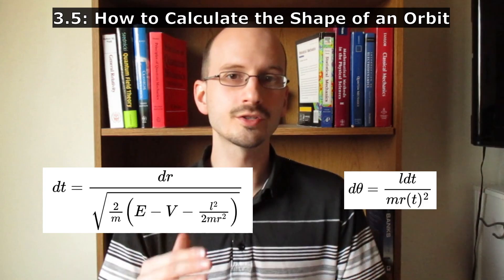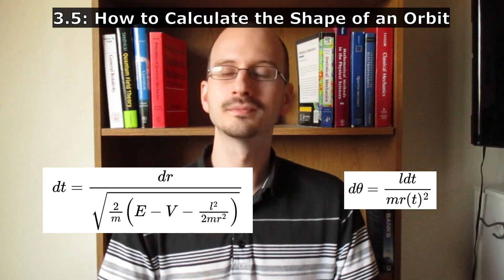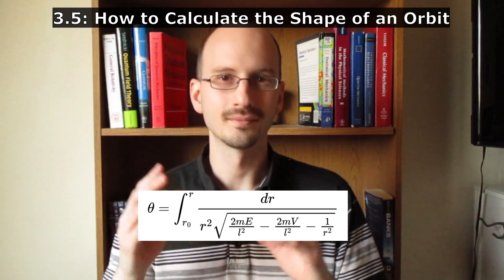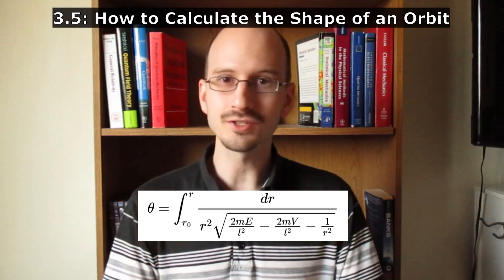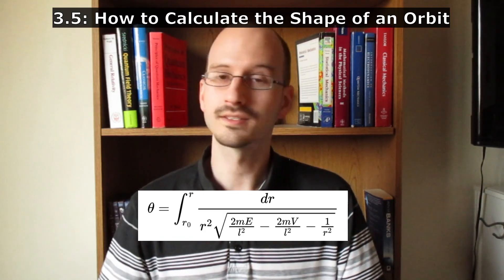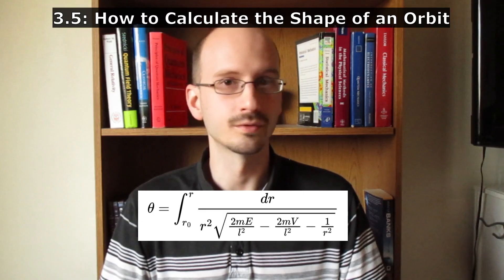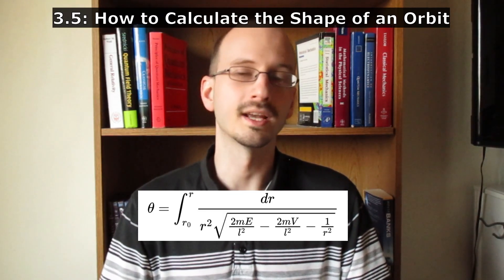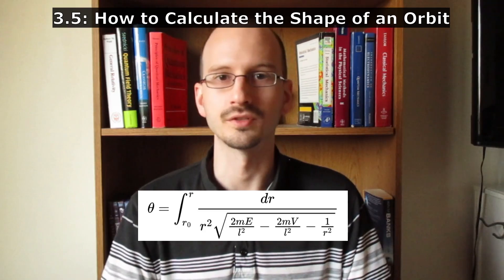Section 3.5 is titled How to Calculate the Shape of an Orbit, represented as theta as a function of r, the angle as a function of the distance between the objects. So remember the equation of motion we set aside earlier? If we combine those, we get this. This is theta as a function of r. And we can't solve it unless we know what v is, unless we know what the potential is. That's the whole section. They don't solve it because you can't solve it in general. You have to know what the specific potential is.